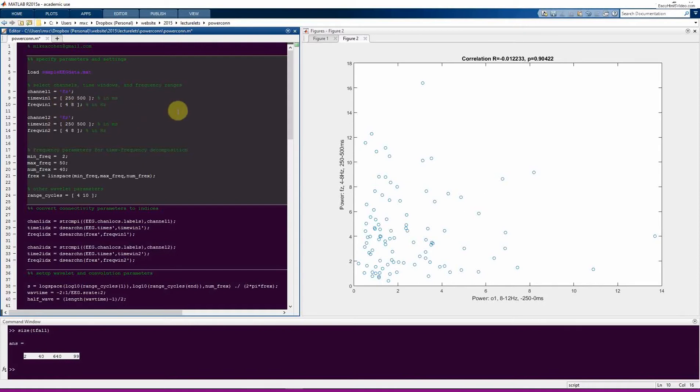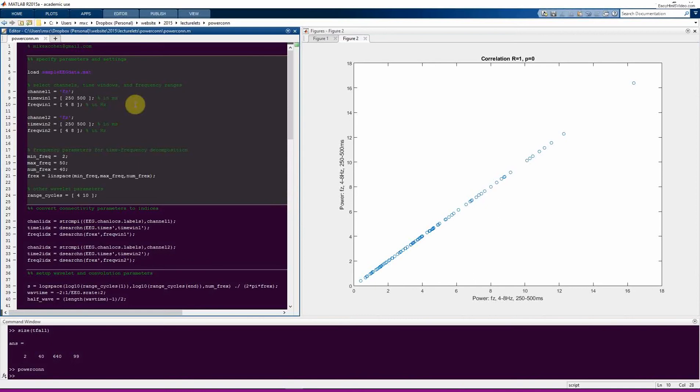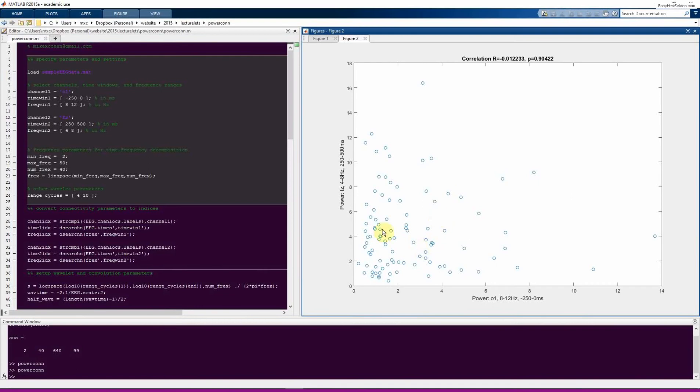And now we expect to see a correlation of 1, which we do. So perfect correlation. Very statistically significant result. But this is a good sanity check because if you did this, the parameters were the same, and you didn't see this perfect correlation, then you would know that there was a mistake in your code. And then you would know that this other result might not be accurate.